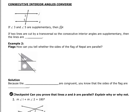We can do the same thing with consecutive interior angles. Remember, these are on the same side — same side, inside. The name is about position relative to your parallel lines and transversal. If two lines are cut by a transversal so that the consecutive interior angles are supplementary, then the lines are parallel. These angles are not equal to each other; they combine to equal 180. When you see different marks on the angles, that means they have different measurements.